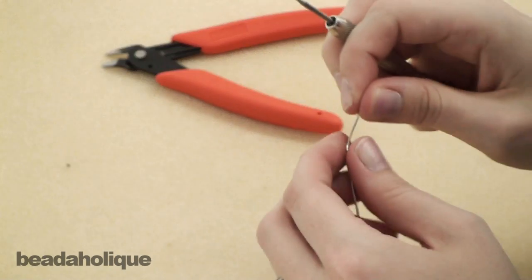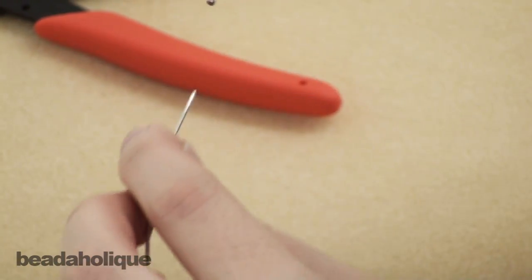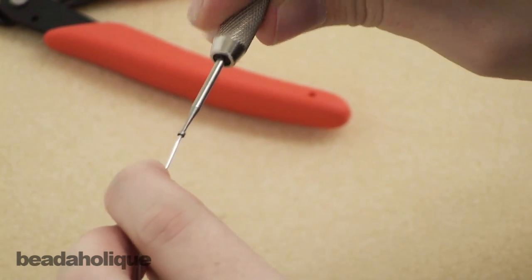Now you're going to take your piece of wire that's sharp and not very friendly and put it right into the tip of the cup burr.